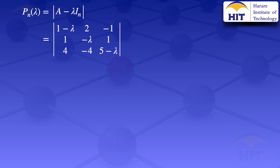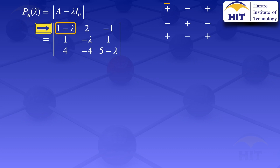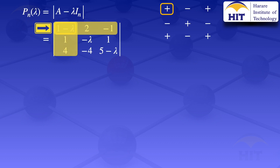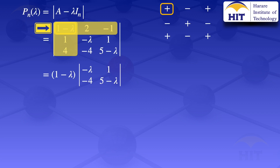To find that determinant, we use the method of cofactor expansion. When using that method, we have the array of positive, negative, positive, negative, and we can expand using any row or column. In this example, I will expand using the first row. Looking at the first element in that row, it's 1 minus lambda, and it's sitting on the positive. We close out the row and column containing that element, then multiply 1 minus lambda by its sign, which is positive, then by the determinant of the uncovered elements: minus lambda, 1, 4, 5 minus lambda.